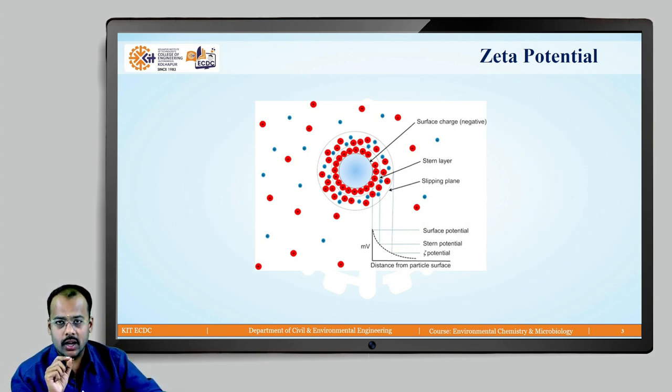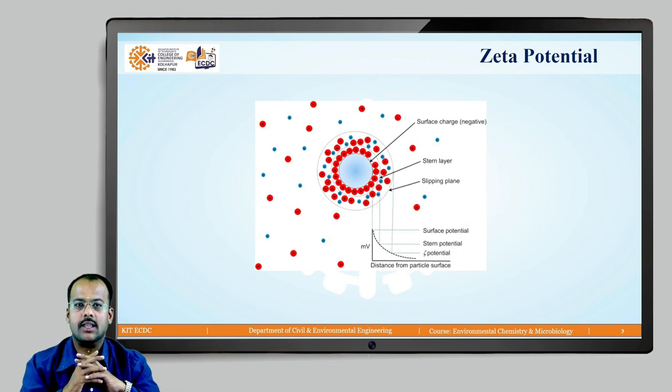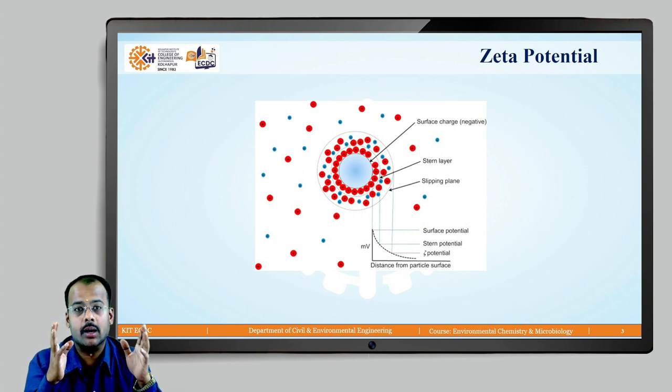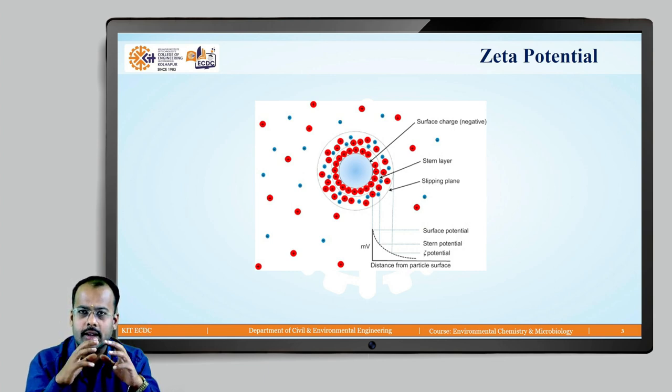Because as soon as you are going away from the surface potential to the outermost orbit, the bonding between the atoms, the bonding between the ions goes on reducing. I will repeat it again, at the core, there is a surface charge which is negative. Many students are afraid about zeta potential. I am trying to tell you the things in a very basic and coordinated manner.